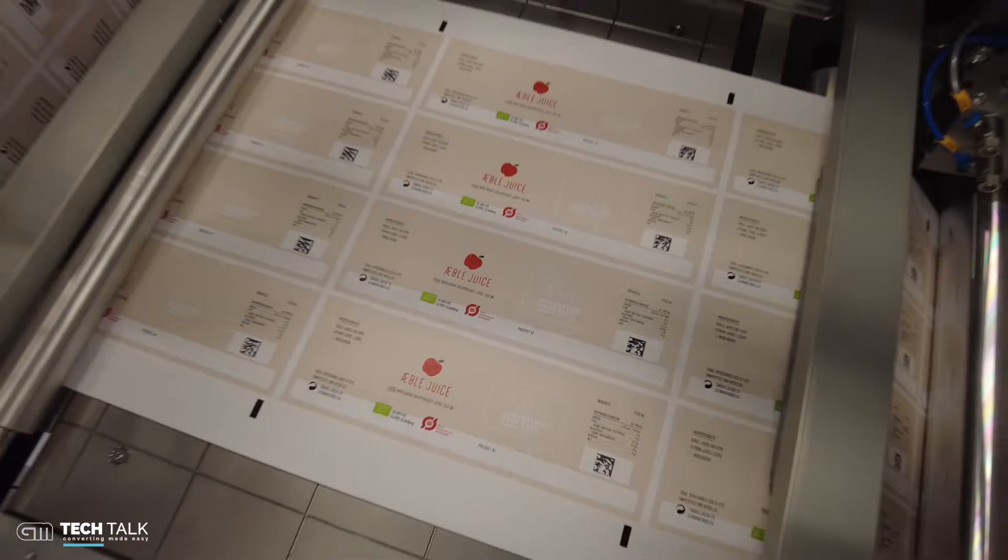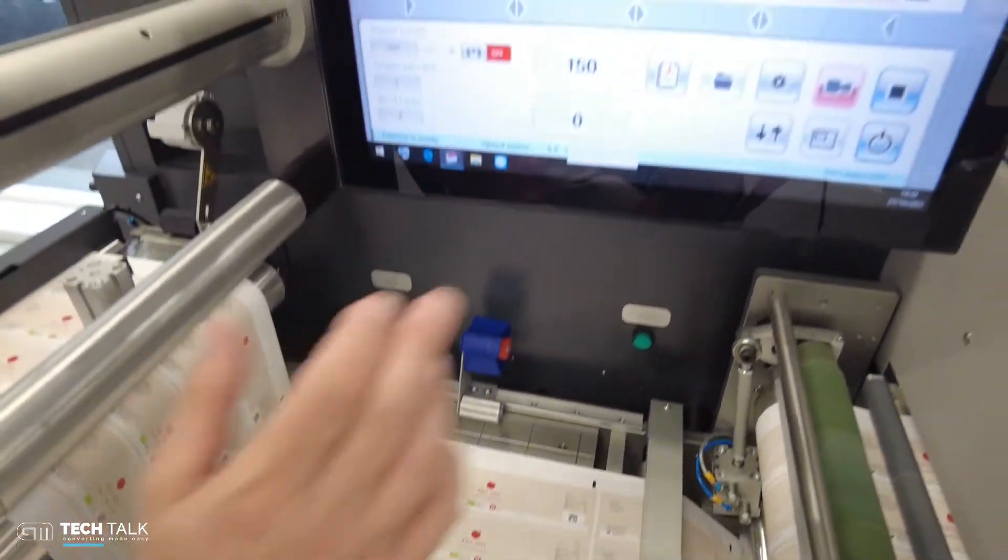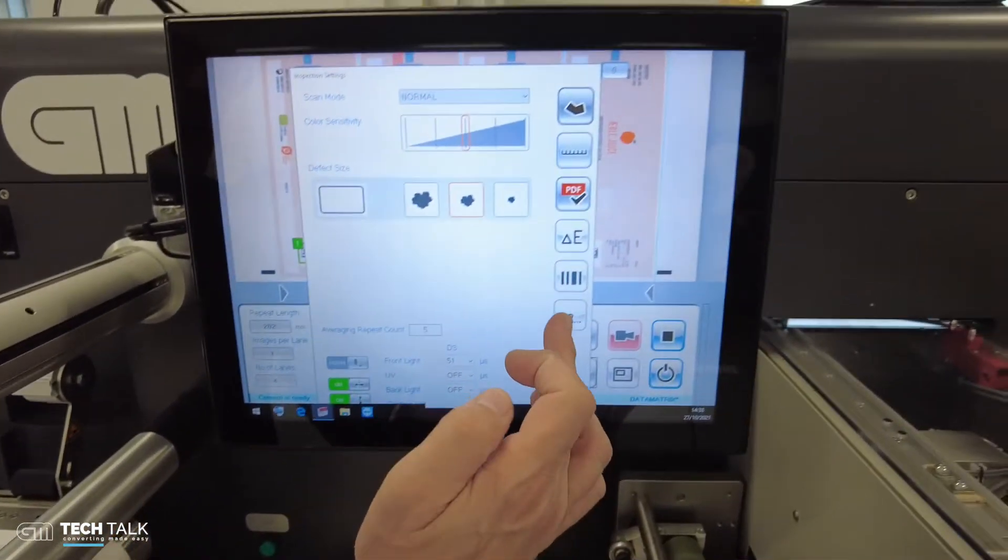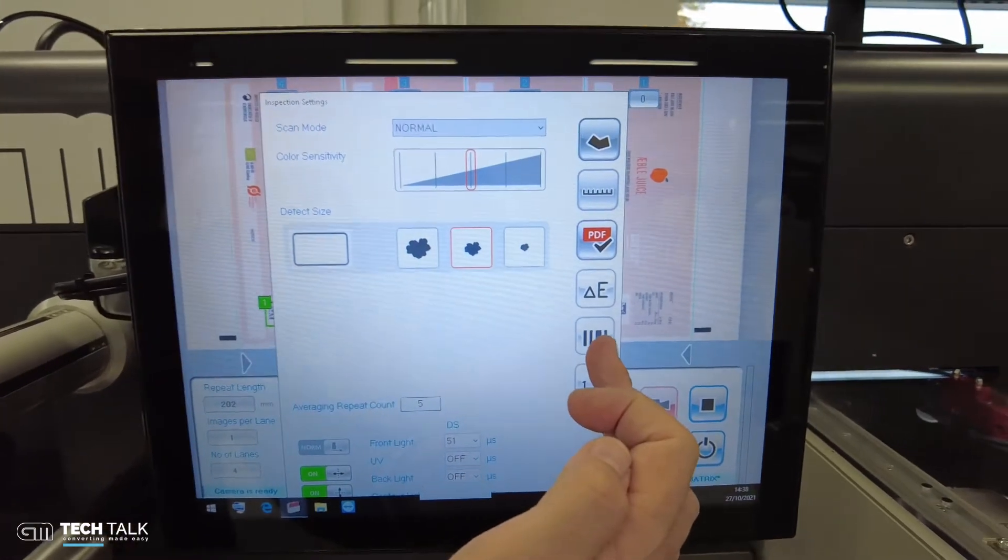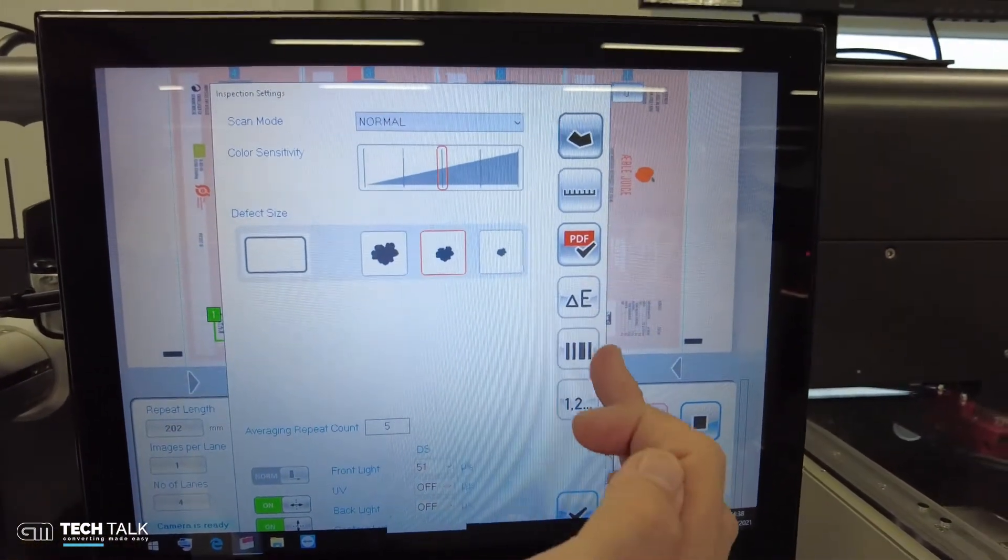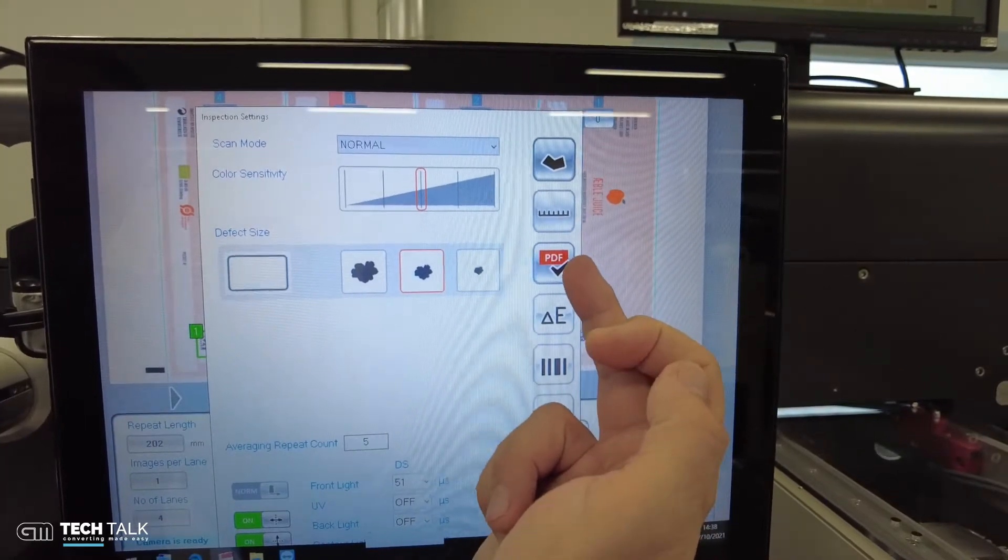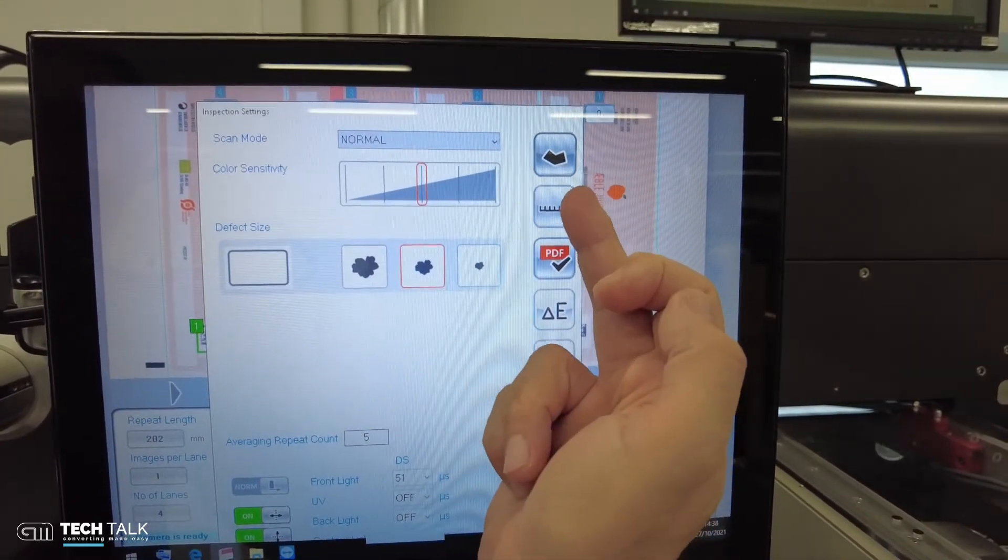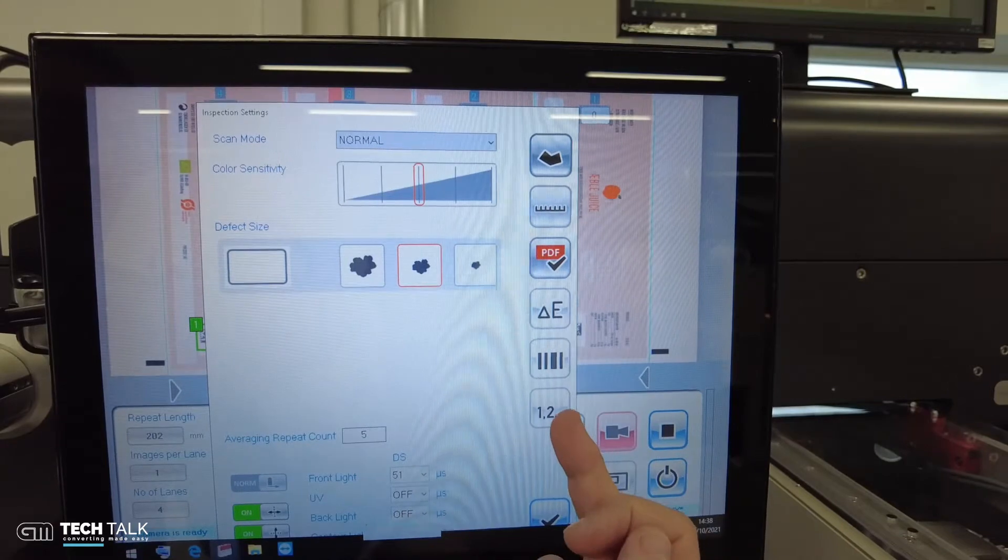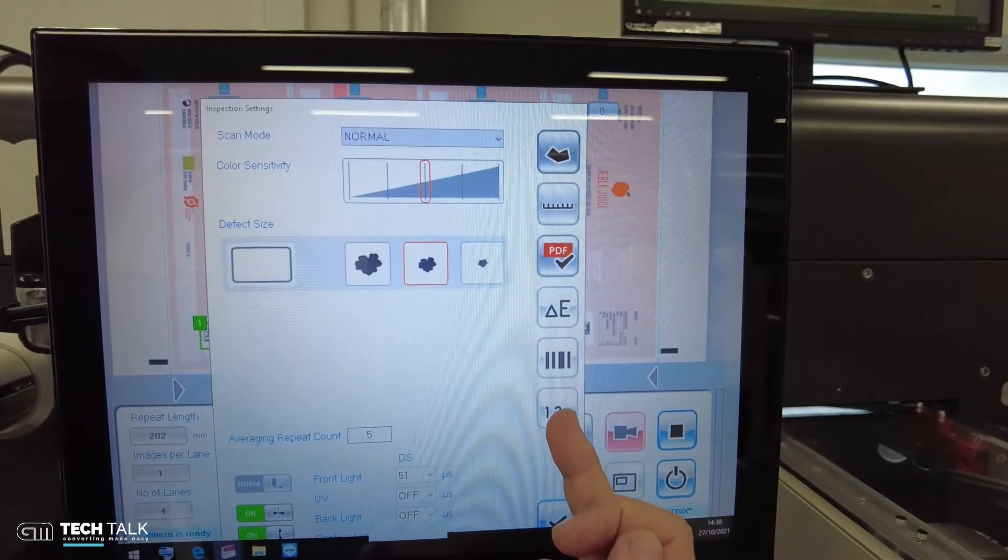For that, the TubeScan has the opportunity to activate the optional barcode module, which you find here. This is one of the optional modules you have beside the Delta E monitoring, the PDF comparison, the distance monitoring, or the decoding of alphanumeric codes.